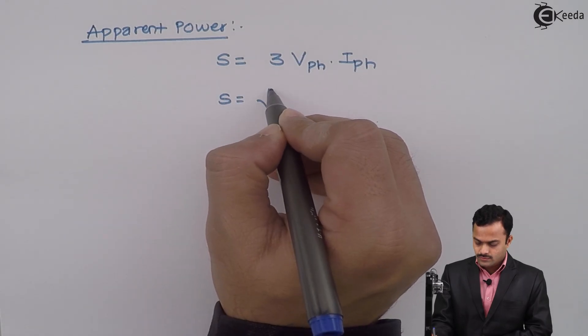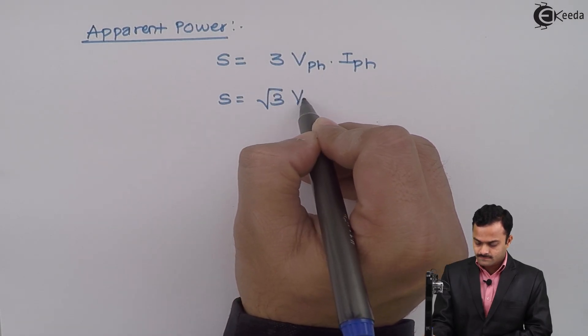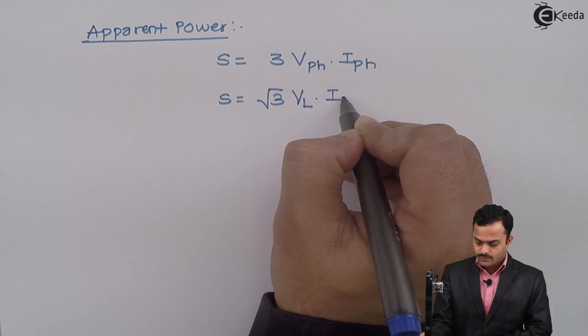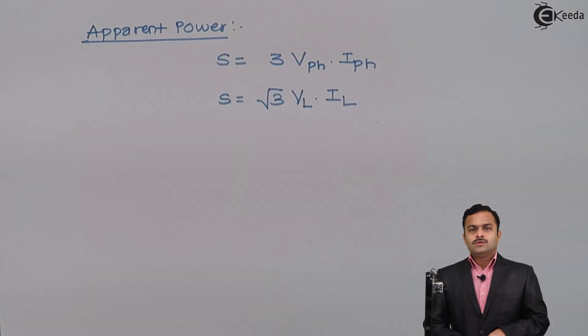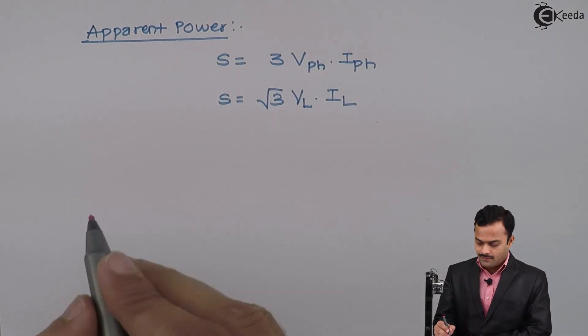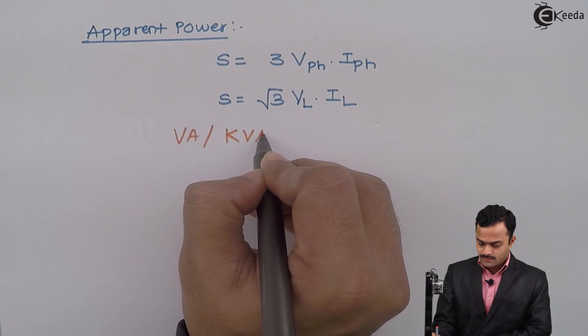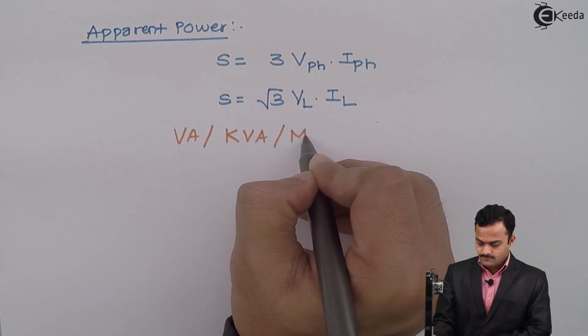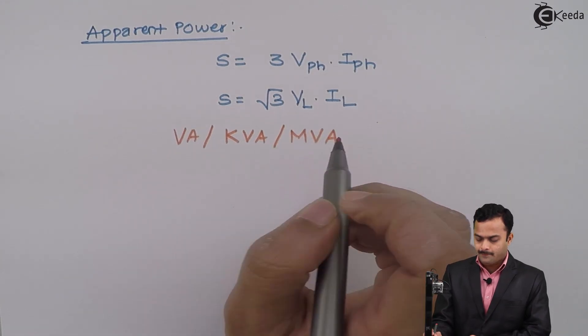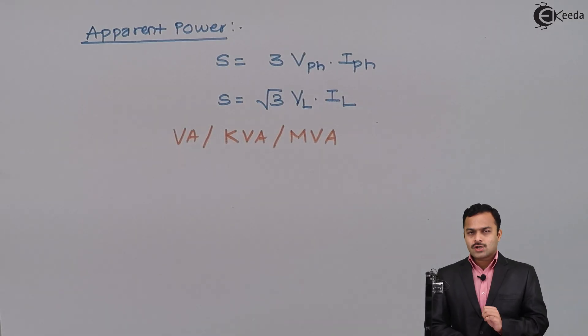S equal to root 3 VL into IL. Unit for apparent power is Volt Ampere or Kilovolt Ampere or Megavolt Ampere. Now, let's draw a power triangle with the help of this.